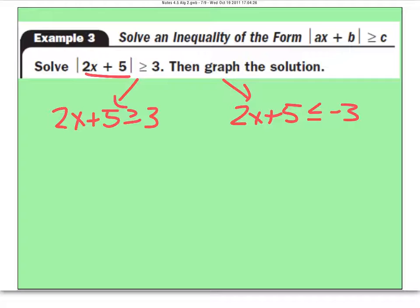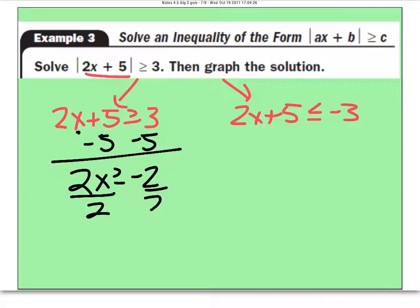Let's go ahead and solve. To get x by itself, I'm going to minus 5. Give me 2x is greater than or equal to negative 2. Now to get rid of multiplying, I divide. x is greater than or equal to negative 1.